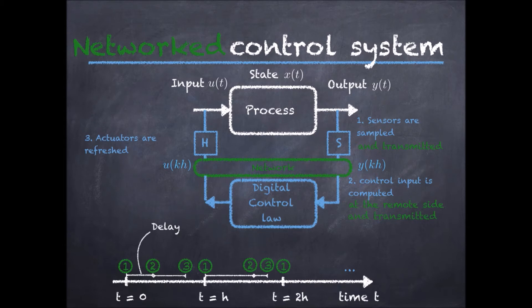Moreover, it is also possible that the data is lost or dropped while trying to transmit. This might occur due to bit errors, buffer overflows, or many other reasons, and this is another important feature of networked control systems.